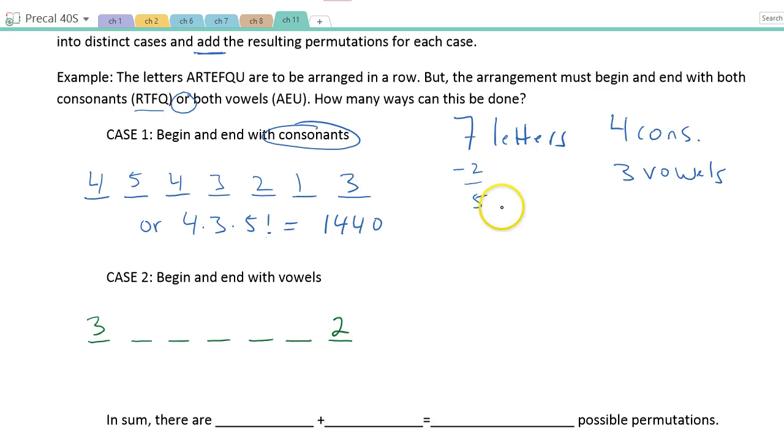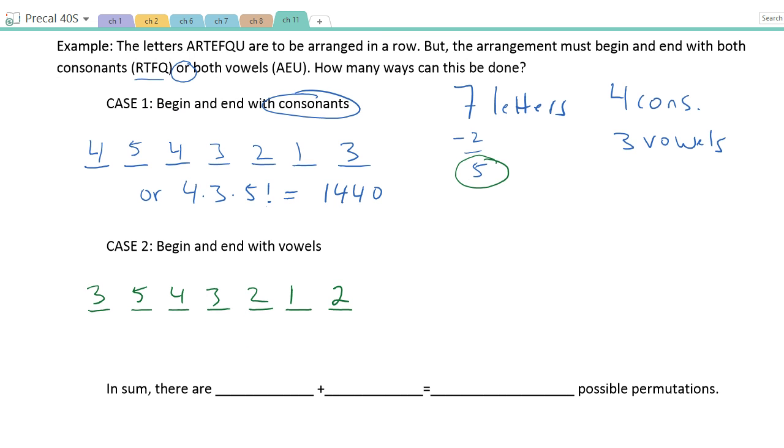Now again, I have five letters left over. I've placed two of them. In this case, I placed vowels, not consonants. So I have five left. So now I go five times four times three times two times one. Instead of four times three times five factorial, now it's going to be three times two times five factorial. And since five factorial is 120, six times 120 is 720.